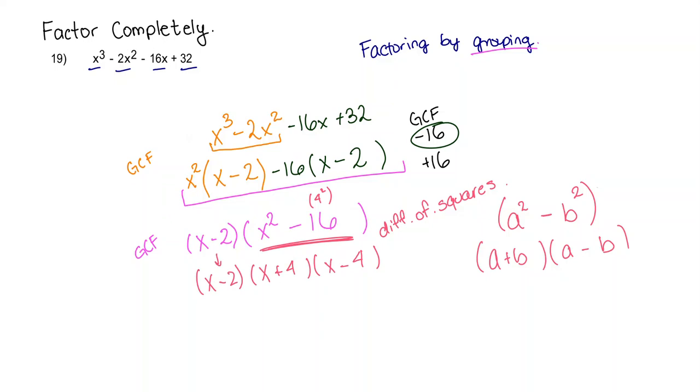And then I'm going to bring down my x minus 2. Now we can't simplify that or factor that even further. So we have factored it completely. And our answer is x minus 2 times x plus 4 times x minus 4.